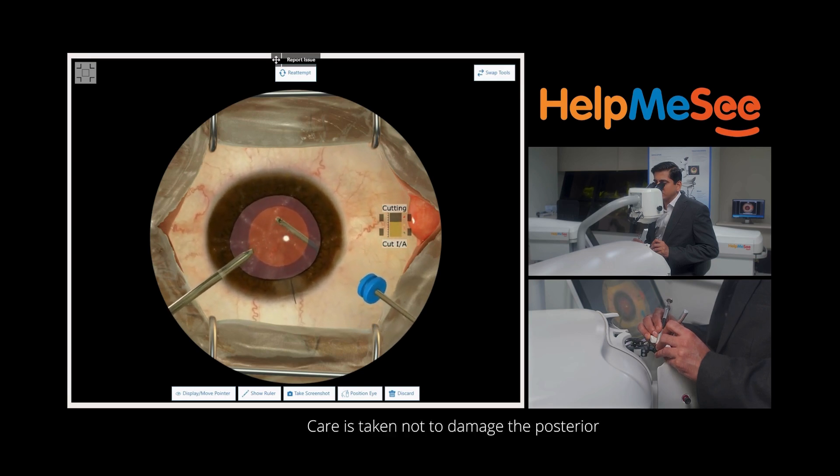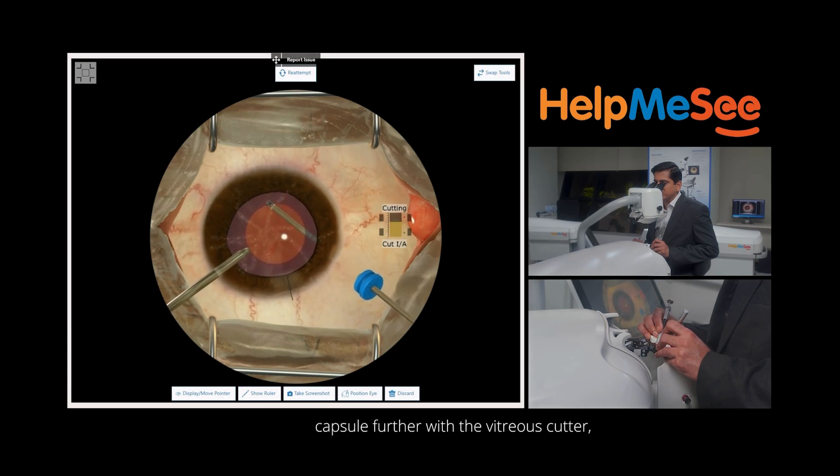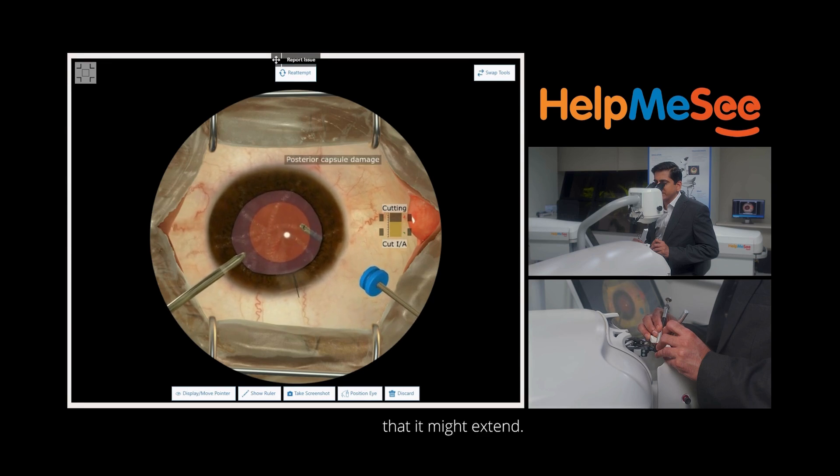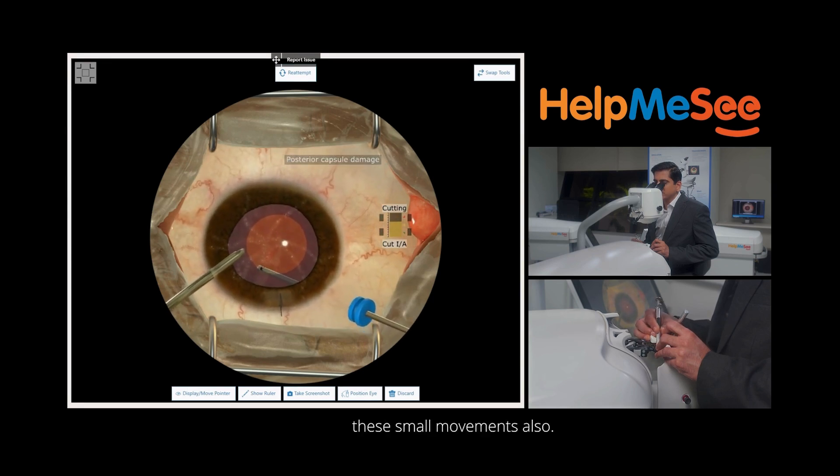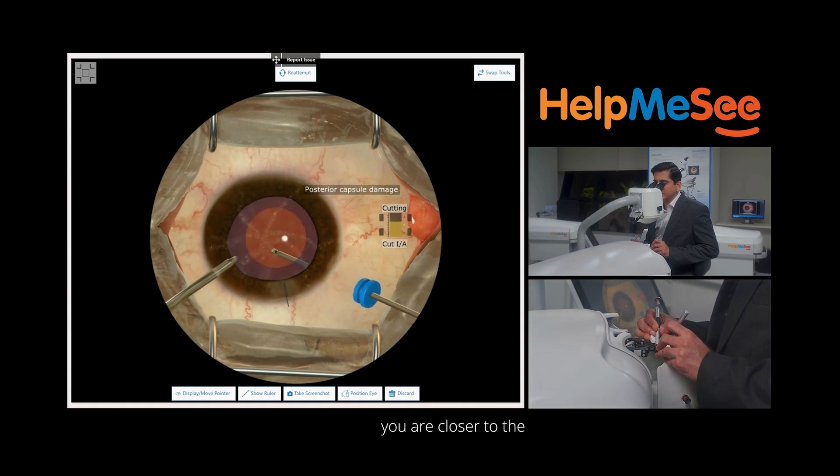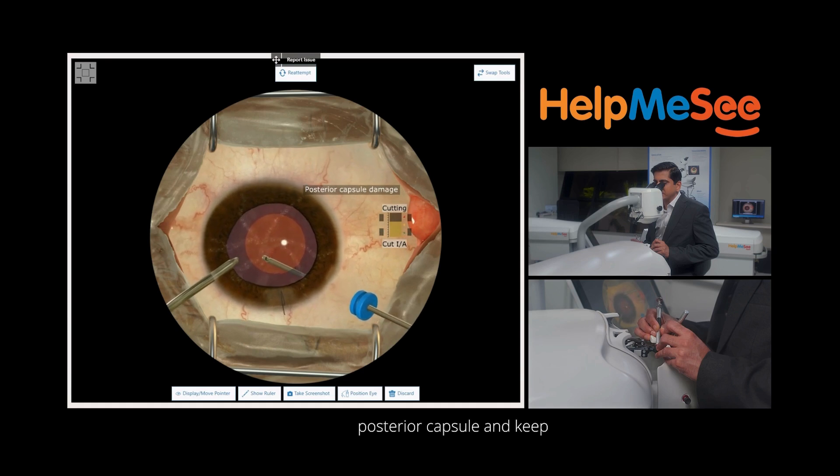Care is taken not to damage the posterior capsule further with the vitreous cutter, but there are chances that it might extend. The simulator picks up these small movements also. It will indicate with alerts saying that you are closer to the posterior capsule and keep away.